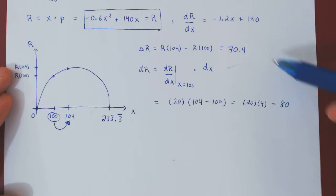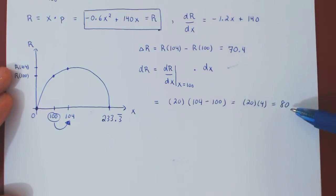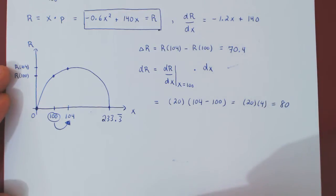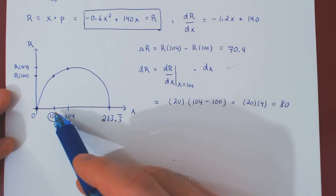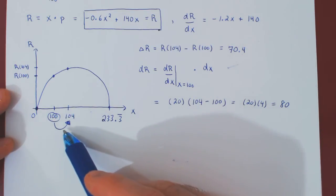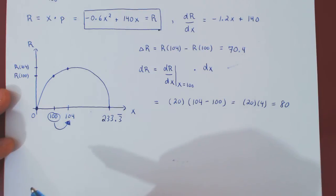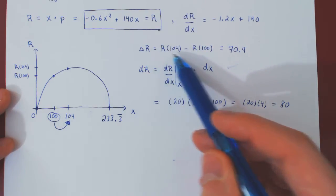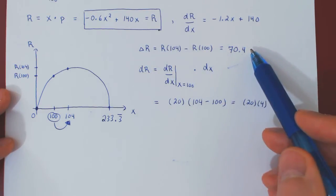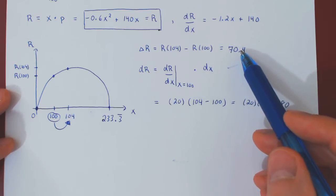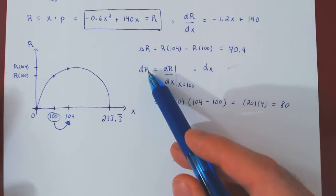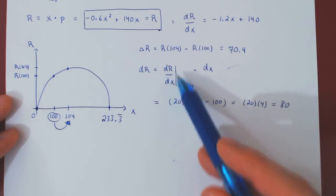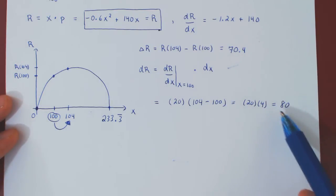The values are not exactly the same, but not that far apart either. To summarize: as sales increase from 100 to 104 units, revenue increases by exactly $70.40, and the differential approximation gives an approximate increase in revenue of $80.